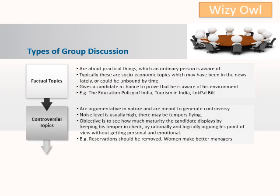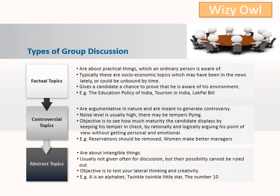Controversial topics are argumentative in nature and are meant to generate controversies. Noise level is usually high and there may be tempers flying. The objective is to see the majority of the candidates. 'Reservations should be removed' and 'Women make better managers' are examples of controversial topics. Abstract topics are usually intangible and not commonly introduced in group discussions, but there is still a possibility. The objective is to test lateral thinking and creativity. 'A is an alphabet', 'Twinkle Twinkle Little Star', and 'the number 10' are examples of abstract topics.